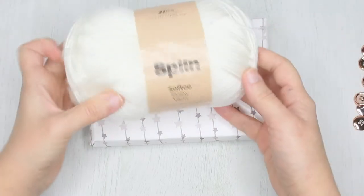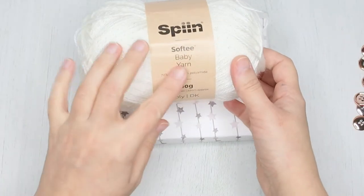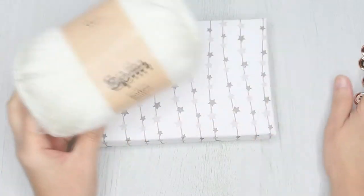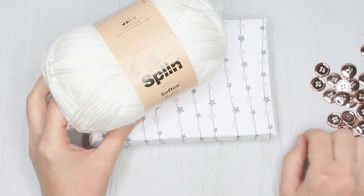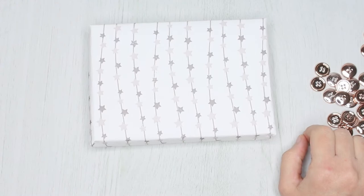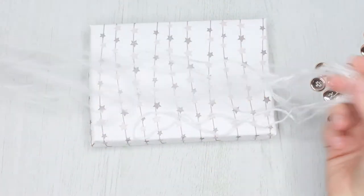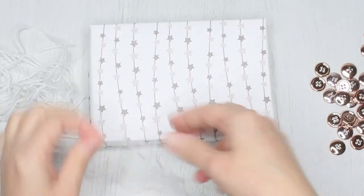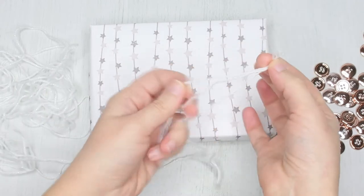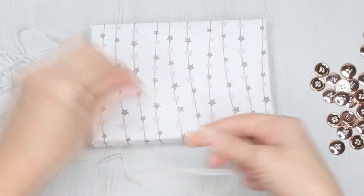For the first idea I used the Spin Softy Baby Yarn which has a bit of sparkly thread in it and lots of buttons. You'll need to cut three lengths of yarn, enough to wrap around your gift three times.